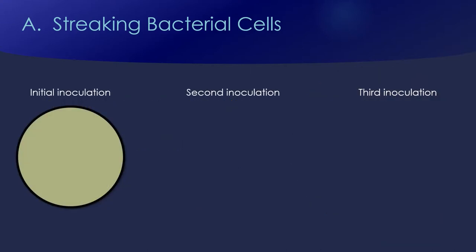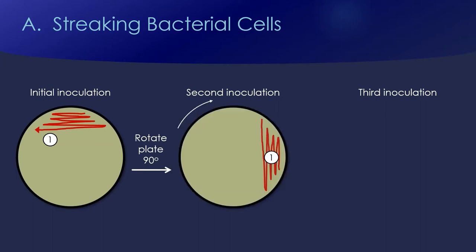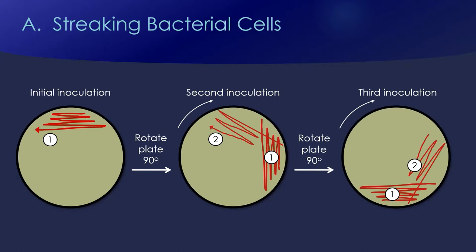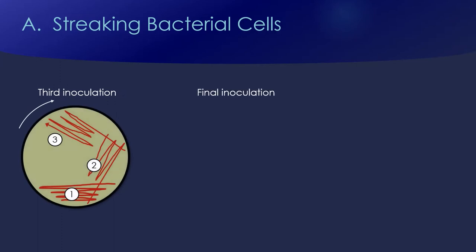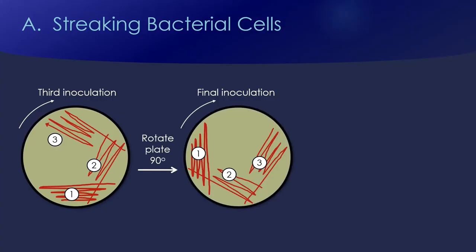To do a streak plate, I'm going to get an agar plate and add an inoculation to part of that plate — a little bit of bacterial culture — and streak it across that portion. Then I'm going to sterilize my instrument, turn my plate, and streak through the original zone into a new zone of the plate, diluting the initial inoculum. I'll do that a third time: rotate my plate, sterilize my instrument, smear the inoculant into a third portion, then one more time into the last portion — so four quadrants total.